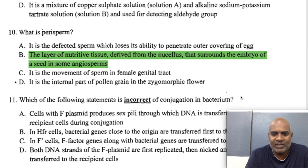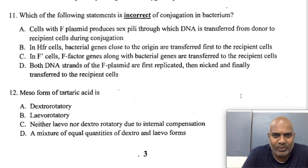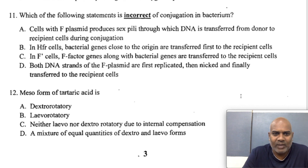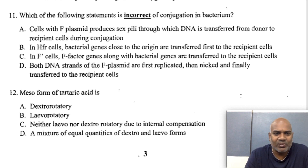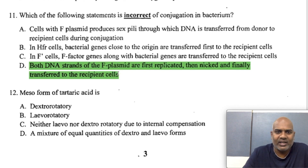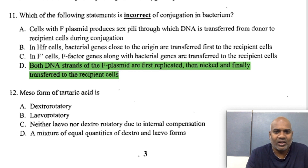Which statement is incorrect regarding conjugation in bacteria? A cell with a plasmid produces sex pili through which DNA is transferred from donor to recipient during conjugation. In HFR cells, bacterial genes close to the origin are transferred first. In F' cells, the F-factor genes along with bacterial genes are transferred to recipient cells. Option D is incorrect: both DNA strands of a plasmid are first replicated and then transferred — only one strand is replicated and transferred; replication of the other strand occurs in the recipient cell.